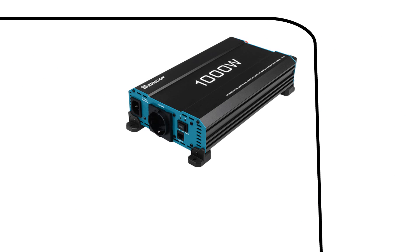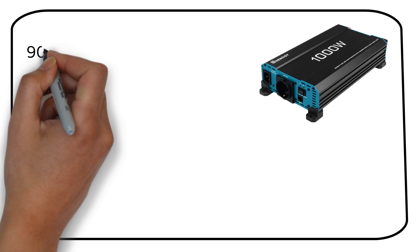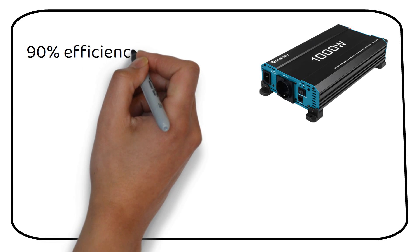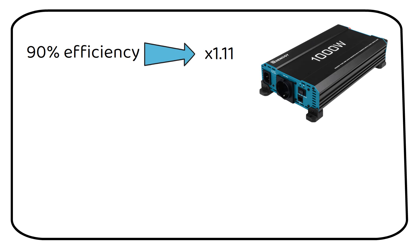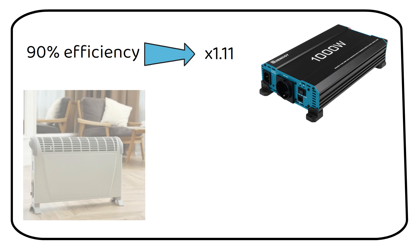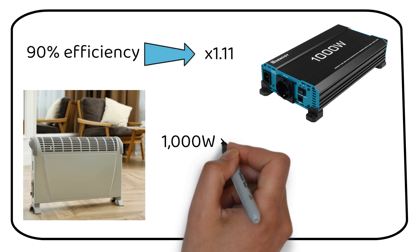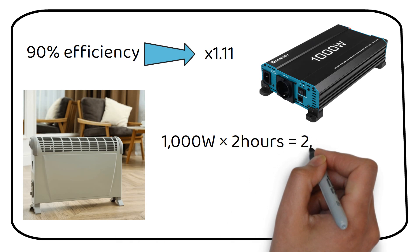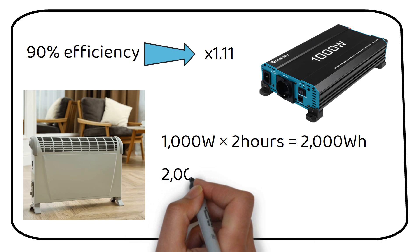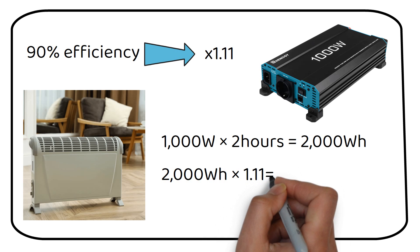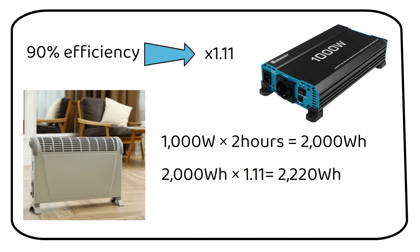If you want to use stored energy, you will probably use an inverter which also has efficiency losses. To account for these losses, it's necessary to multiply our loads by a factor of 1.11, representing a 90% conversion loss. Consider this example. A 1000W AC heater running for 2 hours. Normally, you would calculate the consumption like this. However, with efficiency factored in, it becomes 2220 watt hours.